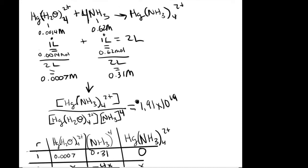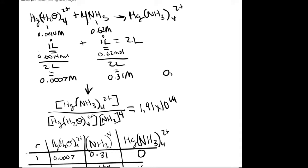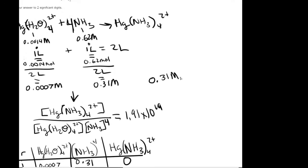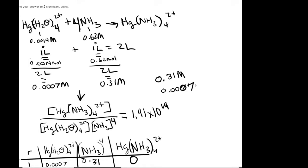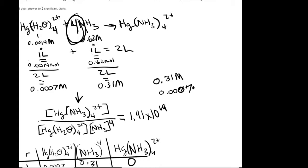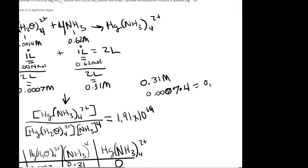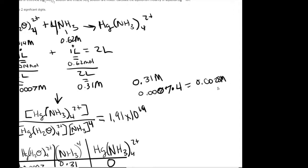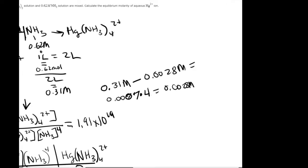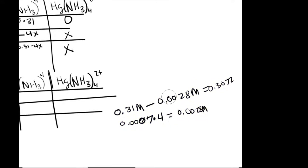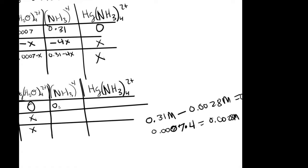So when you take, you take your initial, your new concentration, 0.31 molars. And then you subtract, you look at your concentration of Hg(H₂O)₄. And then you would 0.00707 times the number of moles for NH₃. So that times 4 equals 0.0028 molars. So then you would do 0.31 minus 0.0028 M to get 0.3072. So remember that when you're writing this number in here.